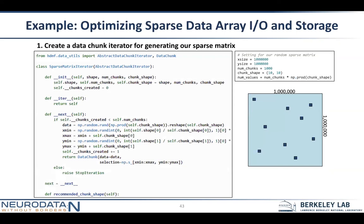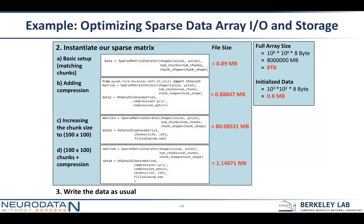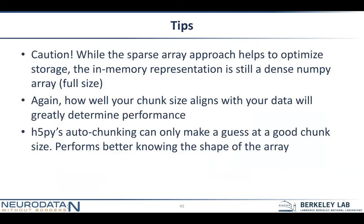For sparse data — here's an iterator that produces sparse data. It would write data in a certain format. The thing to note is we can write sparse data in a few different ways. If we use a sparse matrix, or if we treat this sparse data as sparse data when we write it, the file size is significantly smaller. If you're writing sparse arrays, it will optimize on-disk storage. When you read it in, it will still be a dense numpy array, so just be aware of that. How well your chunk size aligns with your data will have an impact on performance.